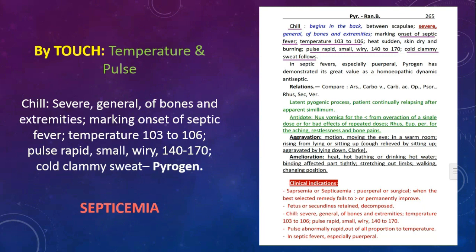Observation related to touch of physician — temperature and pulse. You can see some underlined symptoms in violet color which are signs and symptoms of the disease septicemia for diagnosis and treatment, written in the new revised and updated edition of Allen's Keynote — Keynote's Advanced and Complete. Chills severe, general aching of bones and extremities marking onset of septic fever; temperature 103–106; pulse rapid, small, wiry, 140–170; cold clammy sweat in Pyrogen.